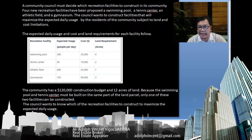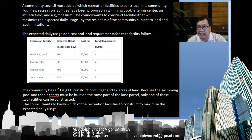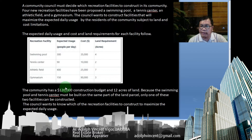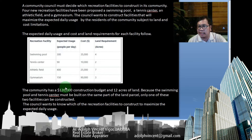Because the swimming pool and tennis center must be built on the same land parcel, only one of these two facilities can be constructed. So you could only build either the swimming pool or the tennis center — that's important to highlight. The council wants to know which recreation facilities to construct to maximize expected daily usage. We will use linear programming to solve this problem, but this week I'm just going to show you how to form the linear programming model.